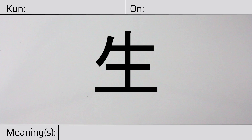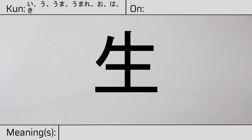Welcome to this lesson on Japanese kanji. Today, we'll be discussing this character. This kanji has kunyomi, or Japanese readings of i, u, uma, umare, o, ha, ki, nama, na, or mu. And it has onyomi, or Chinese readings of sei or shou.